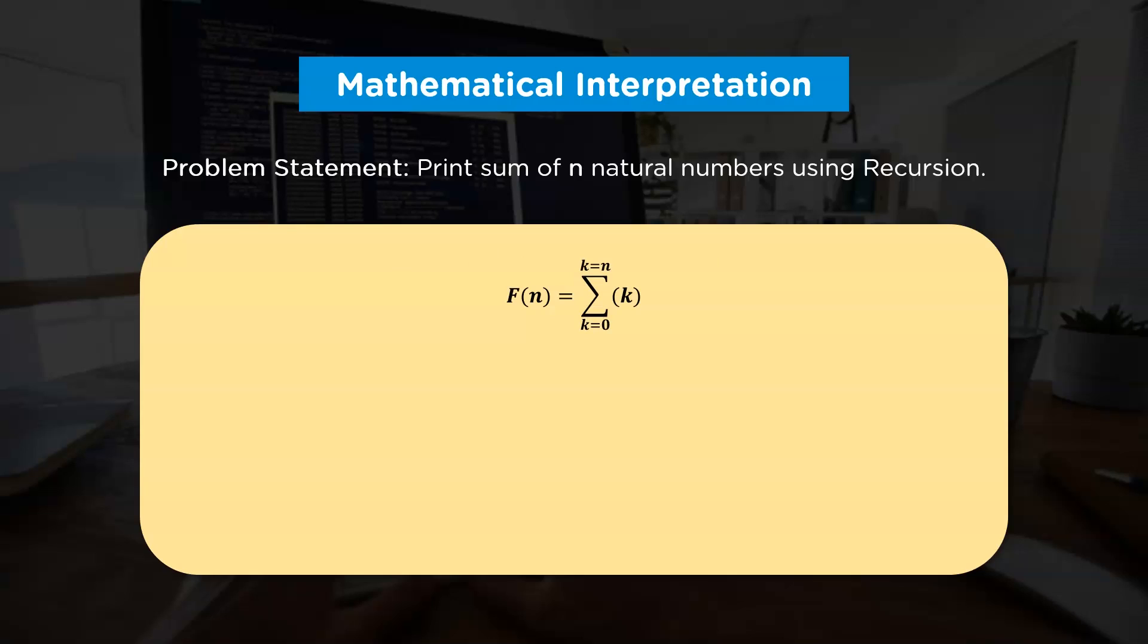Now the critical question here is, how can we actually represent this in form of recursive function? The answer is quite simple. All we need to do is break this larger problem into small fragments. We can represent this problem as n plus sum of all natural numbers till n minus 1. This process of traversing in function f of n minus 1 times is called the recursive step of our problem statement.